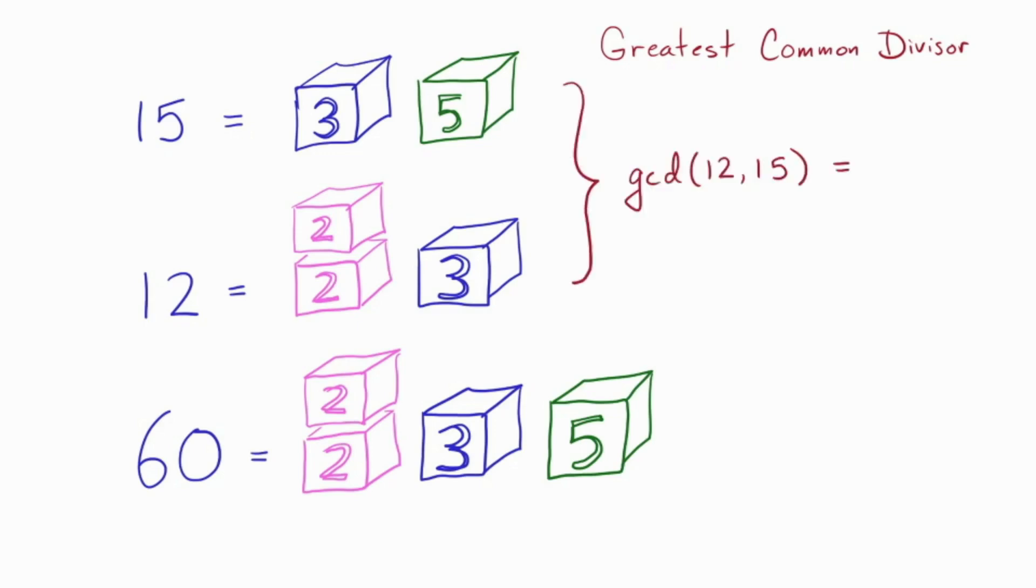Let's take 12 and 15. We just saw that they don't divide each other. So, what's their greatest common divisor? Well, it's their shared architecture, the blocks that they have in common. If we overlay them on one another, each of them has some extra stuff, but the common stuff is their GCD. In this case, it's just the single blue block, the 3.